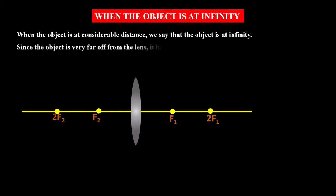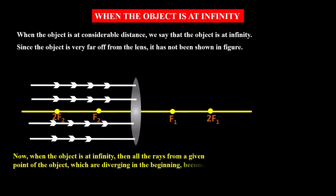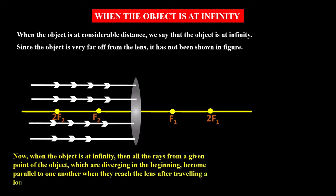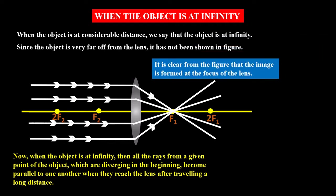Since the object is very far off from the lens, it has not been shown in the figure. When the object is at infinity, all the rays from a given point of the object, which are diverging in the beginning, become parallel to one another when they reach the lens after travelling a long distance. After falling on the lens, refraction takes place and the light rays converge and meet at one point.